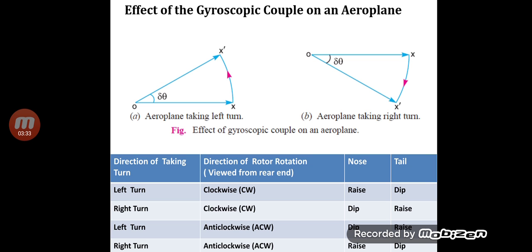This slide shows how the gyroscopic couple acts on the aeroplane. When the aeroplane takes a left turn, there is a chance that the nose will get lifted. Whereas if it takes a right turn, the nose may go down. This depends on the direction in which the propeller is rotating when viewed from the rear or front of the aeroplane. I have already explained how to calculate the gyroscopic couple and how to judge its effect on the aeroplane.